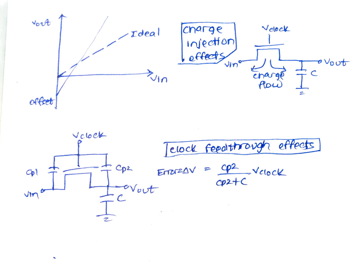Another non-linearity is clock feedthrough, which is due to the parasitic capacitor present in MOSFET. Consider the following circuit in which parasitic capacitors are there. Error is equal to CP2 by CP2 plus C times Vclock. CP2 is a parasitic capacitor. It depends on the amount of overlap between the gate and the drain regions and the width of the MOSFET.